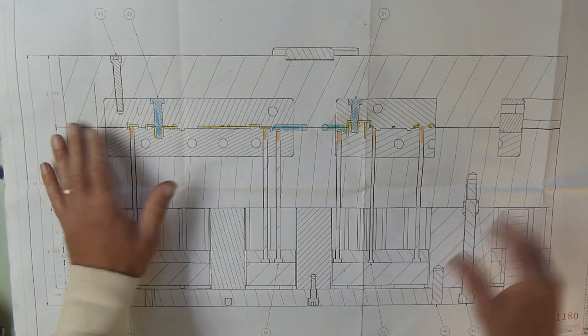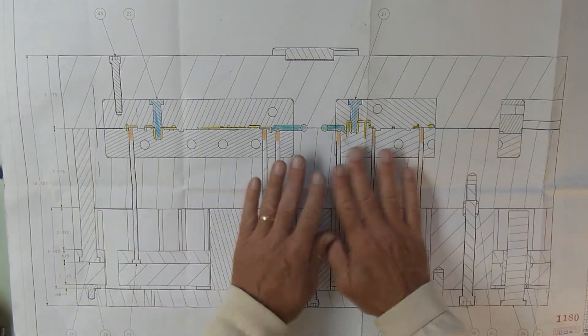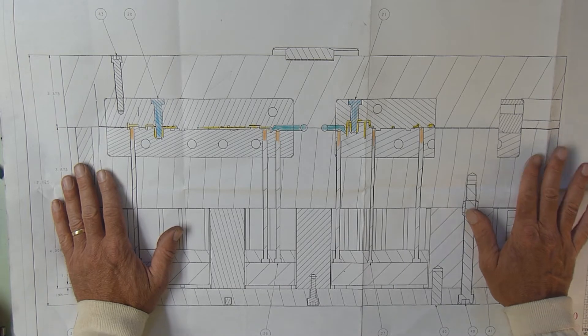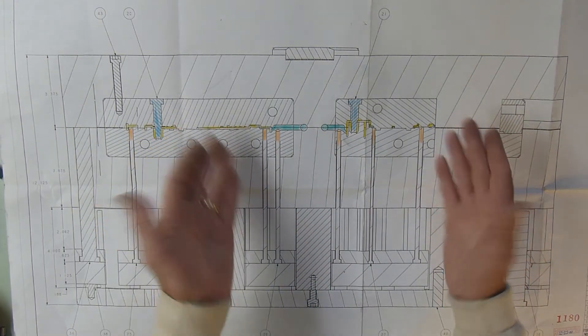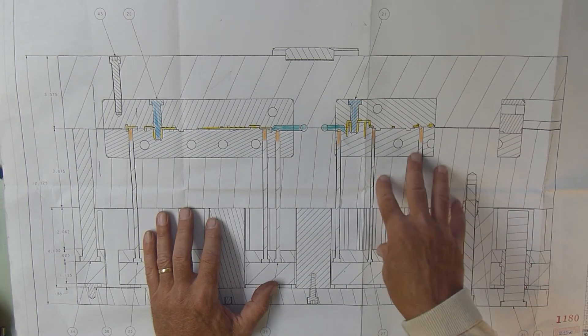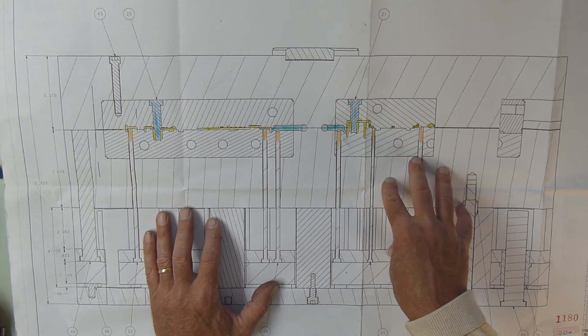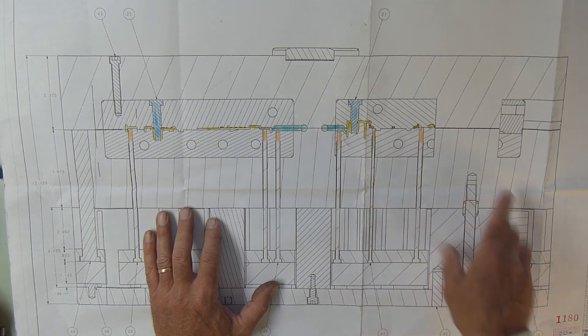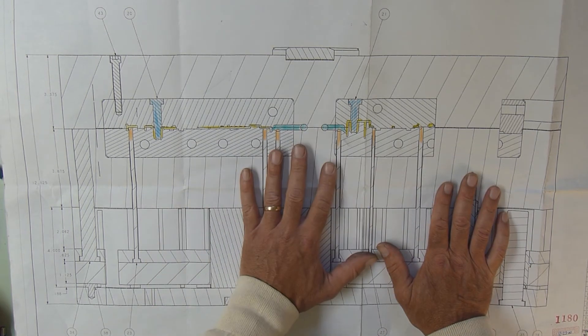So next view we're going to maybe look at the plan view where we're seeing this face on and you'll get a little bit better view. I think we'll start with the back half of the mold because that's where a lot of the ejector pins and things like that are. So we'll go over that on the next video.